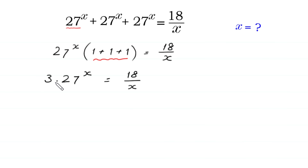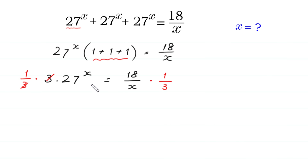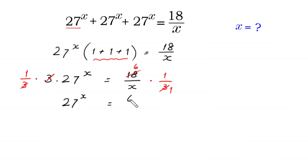Now we multiply both sides of this equation by 1 over 3. On the left side, the 3 cancels with the 3, leaving 27 to the power x. On the right side, 18 divided by 3 gives 6, so we have 27 to the power x is equal to 6 over x.